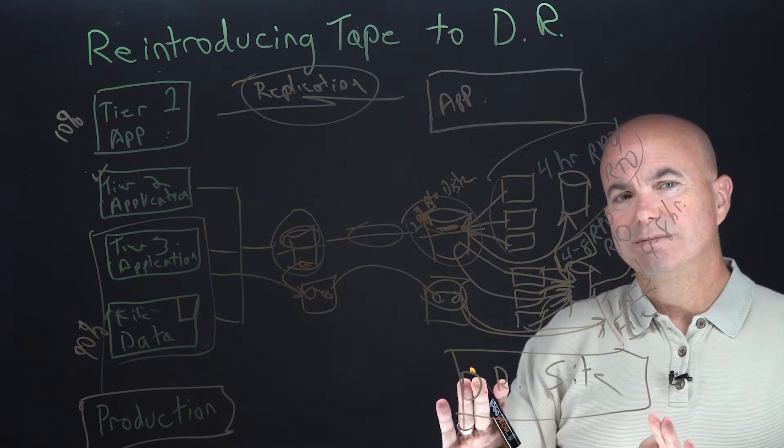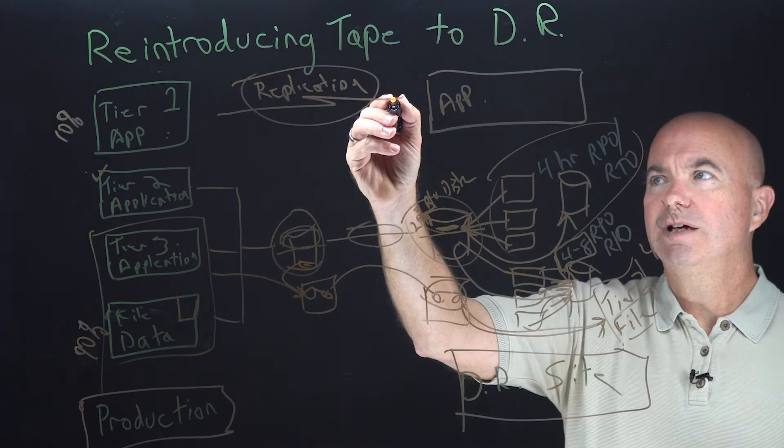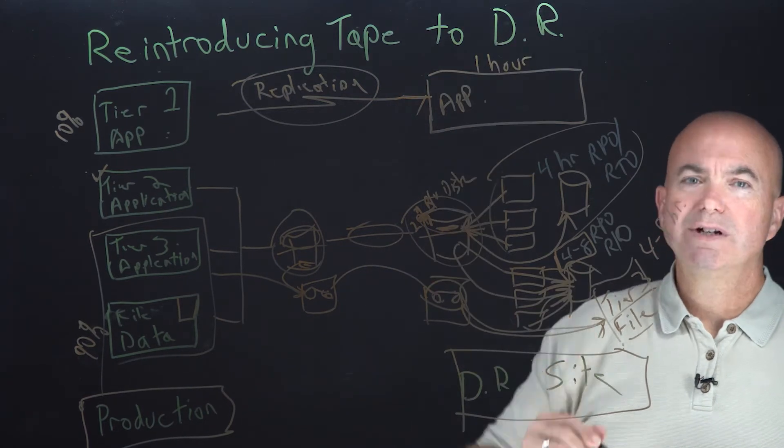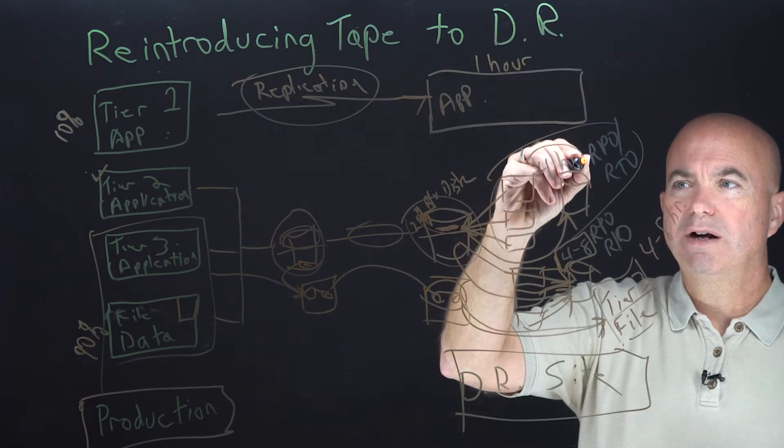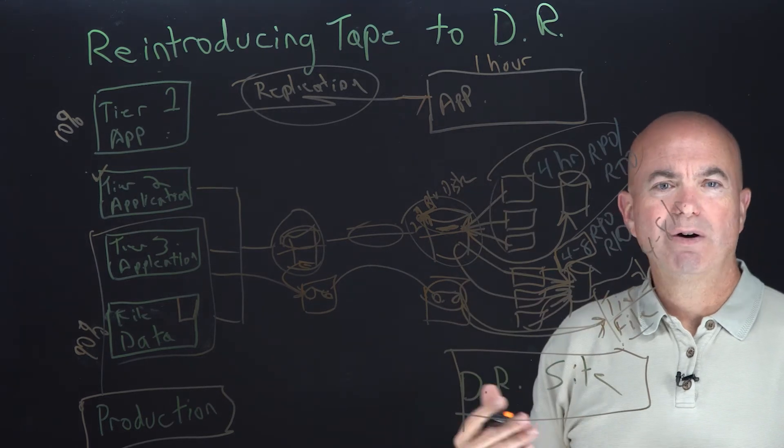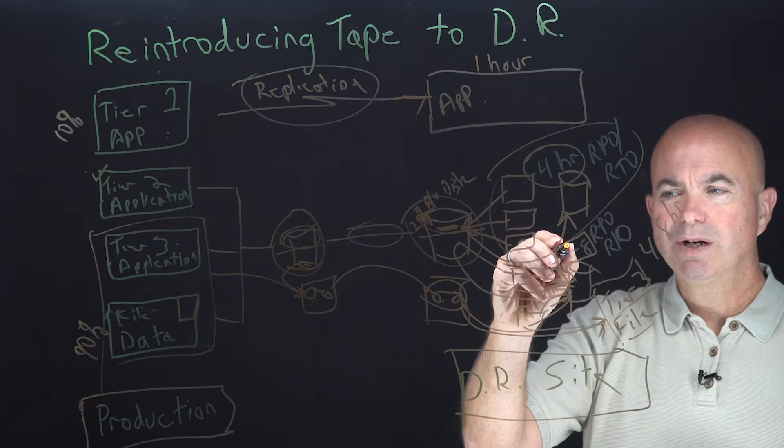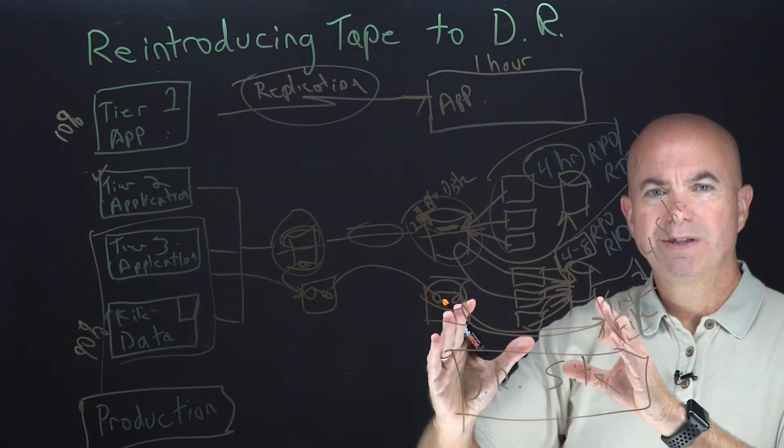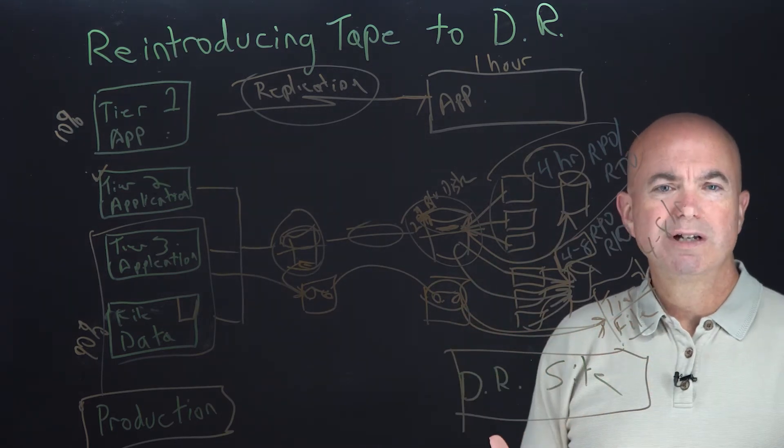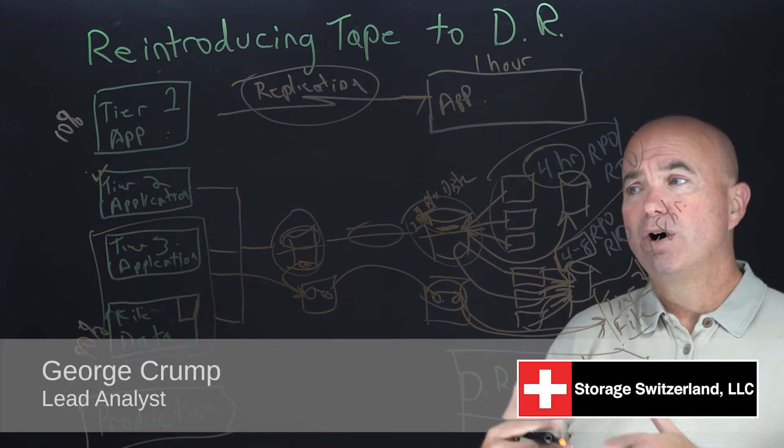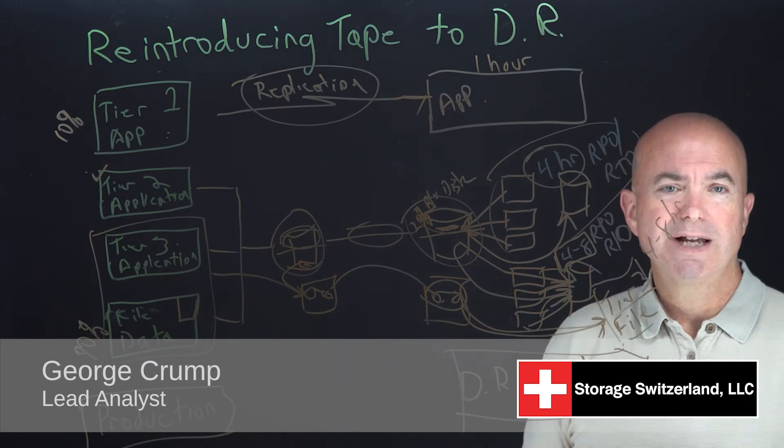We're not sacrificing any recovery effort. We're still going to hit our really fast sub one hour recovery times here. We're still going to hit our pretty fast four hour or less recovery times for our tier two applications. And we're comfortably going to hit our four to eight hour recovery times with tape. Again, we suggest using a blended strategy of tape and disk in both backup and also in disaster recovery.